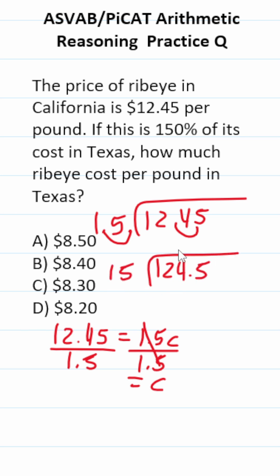15 goes into $124 eight times without going over. We know that because of our answer choices. Start with 8. 15 times 8 is $120. $124 minus $120 is 4.